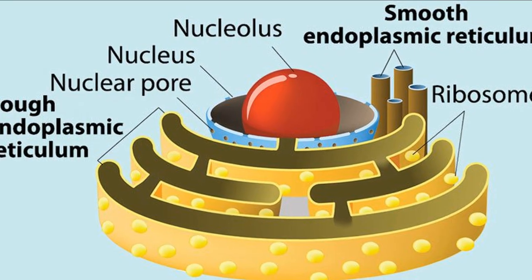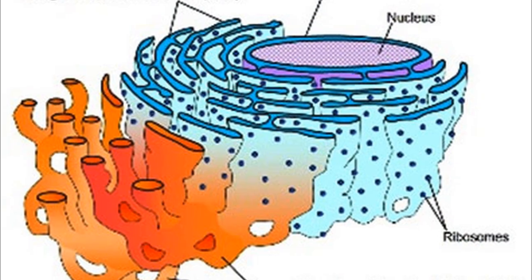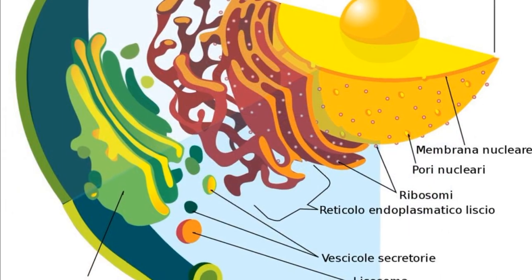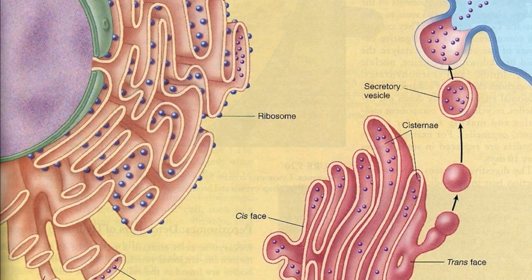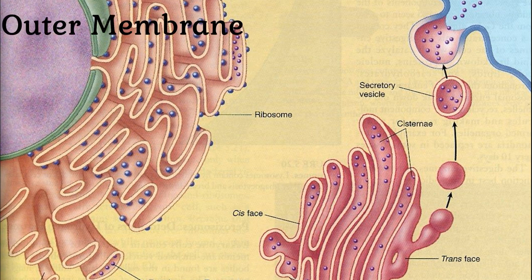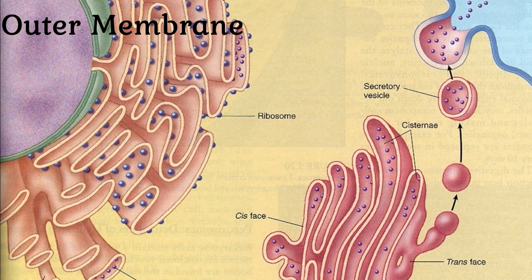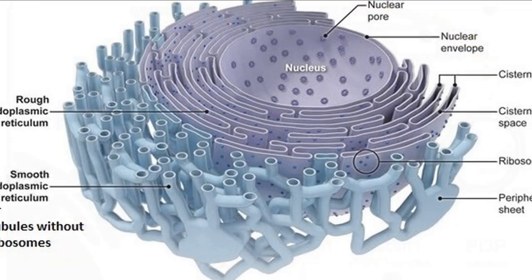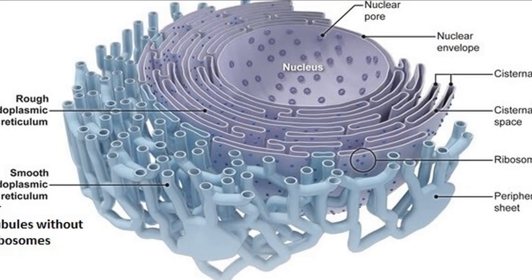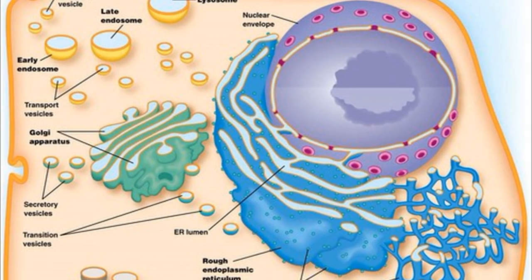Endoplasmic Reticulum – It is a complex tubular membrane system which almost fills up the intracellular cavity. Some tubes are studded with rounded bodies called ribosomes. On one end it is connected to the outer membrane of the nucleus, and on the other to the plasma membrane. It forms a supporting skeletal framework of the cell and provides a pathway for the distribution of nuclear material from one cell to another.